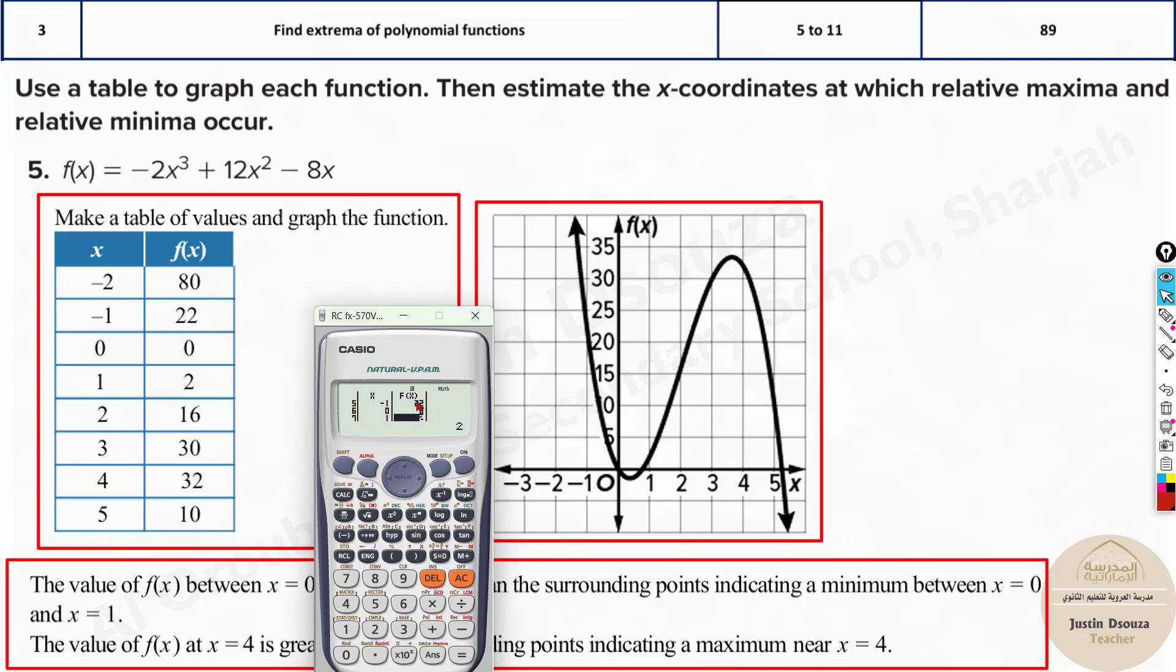So more likely 0 to 1 there is a minimum point. And where is again maximum? You can see here now, from about 3 to 4 you can see that there might be a maximum because then again it is reducing. So that's how we can easily deduce from the graph itself and predict the values.